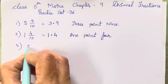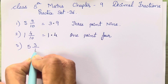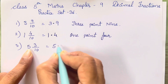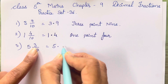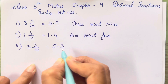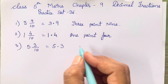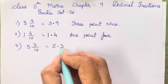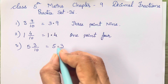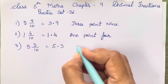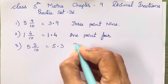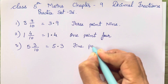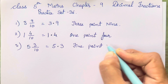Next is 5 3/10. So 5 will come to the left hand side of the decimal point, and 3 will come to the right hand side because there is one zero in the denominator. After the decimal point only one digit has to come. So this you have to write as 5.3.